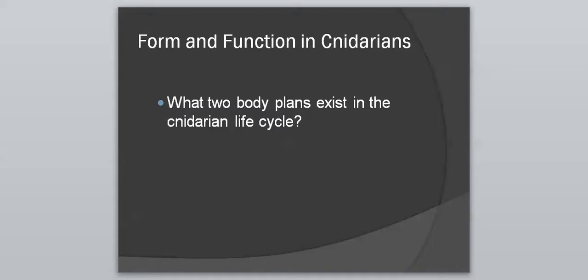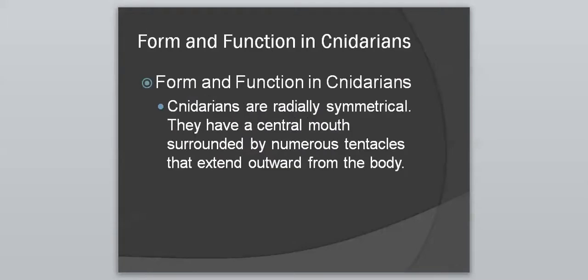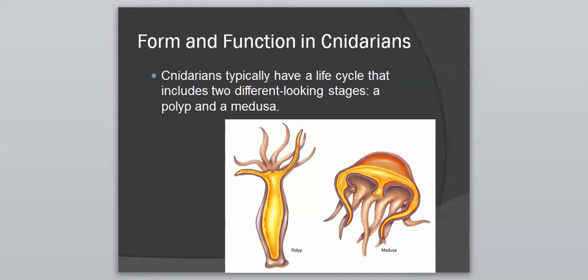Two different body plans exist in the cnidarian lifestyle. Both are going to be radially symmetrical, so you can draw any number of lines through them and they'll be equal on both sides. They have a central mouth surrounded by numerous tentacles that extend outward from the body, and they usually have a life cycle that includes two different-looking stages: a polyp and a medusa.